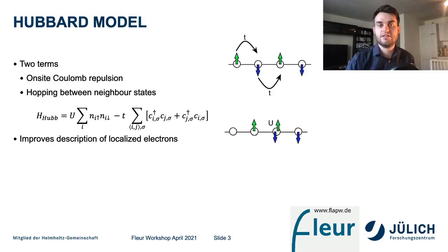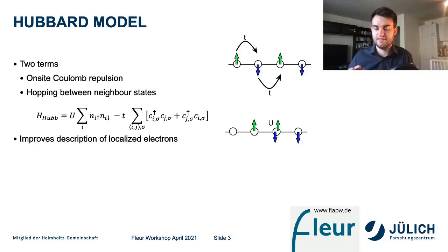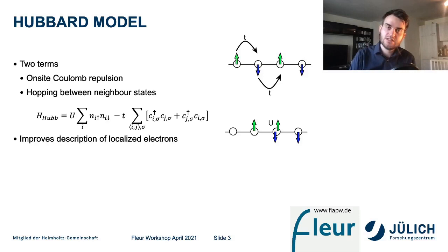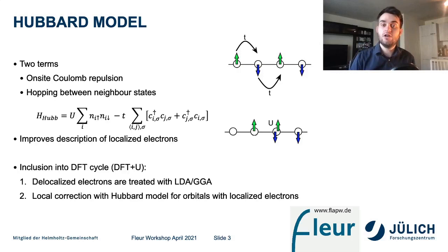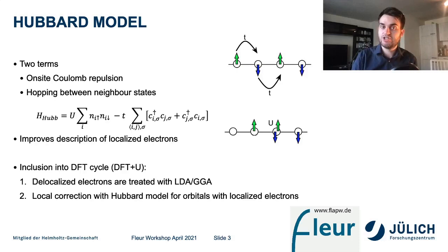The Hubbard model is a very simple lattice model containing two terms: an on-site Coulomb repulsion where two electrons in the same state with different spin receive a Coulomb repulsion term, and the possibility of hopping between neighbor states. This model is very effective in describing interactions of localized electrons. In DFT plus U, we treat the delocalized electrons with standard LDA or GGA and leave them untouched, while only the localized electrons get a local correction in the form of the Hubbard model.